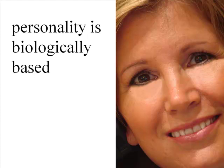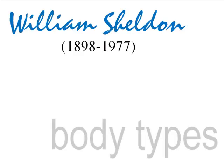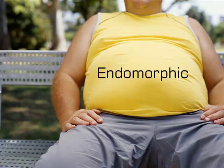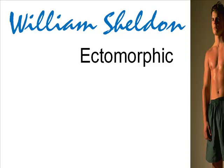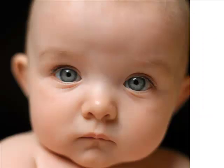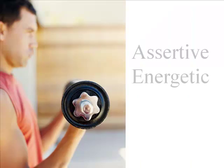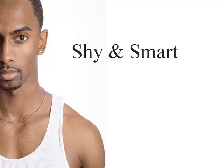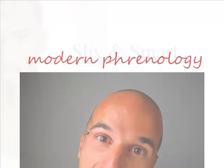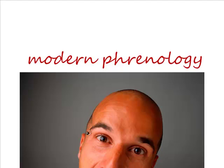The tendency was to believe personality is biologically based and not limited to brain physiology. In the 1940s, William Sheldon proposed that personality and body types were linked. He categorized people as being endomorphic (soft and round), mesomorphic (muscular and rectangular), and ectomorphic (fragile and tall). According to this approach, soft and round folk were friendly and cuddly, but muscular mesomorphs were assertive and energetic. Ectomorphs might be thin and shy, but they were smart. Sheldon's theory was more phrenology than psychology, but you'll still encounter people following this line of reasoning.